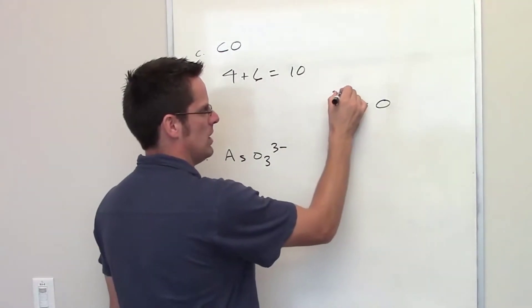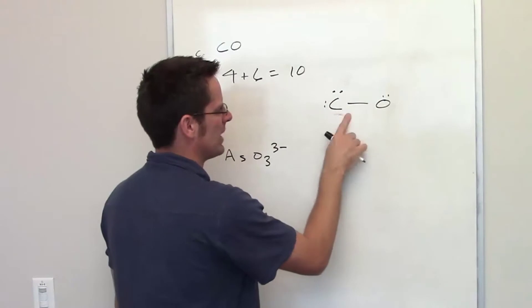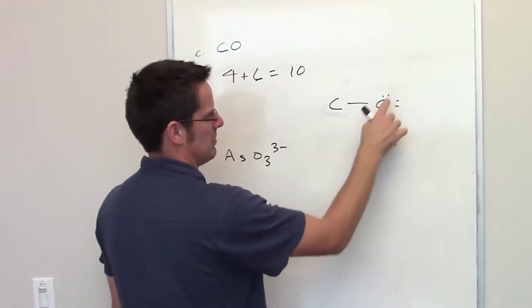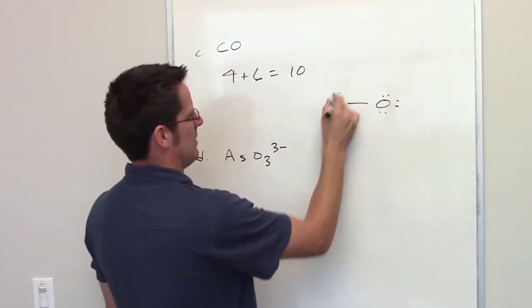I could put electrons probably on the more electronegative atom first. So one, two, four, six, eight, and then I guess I have ten there.